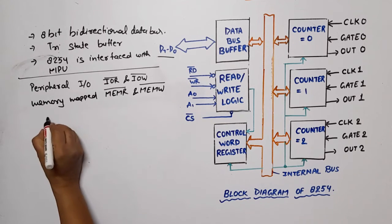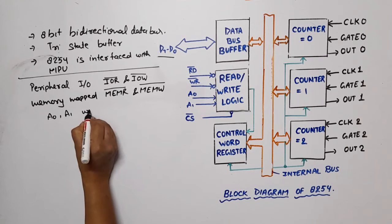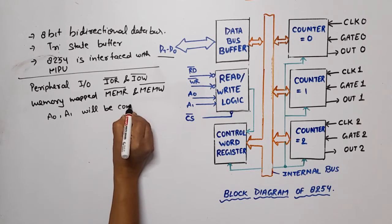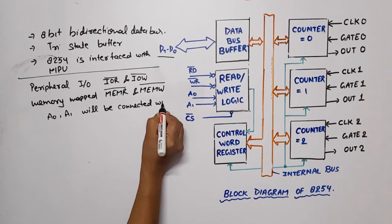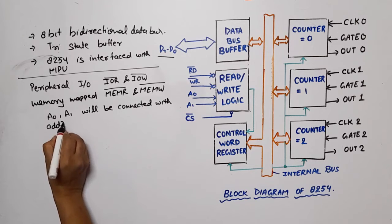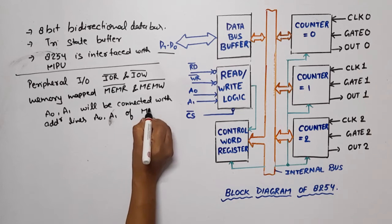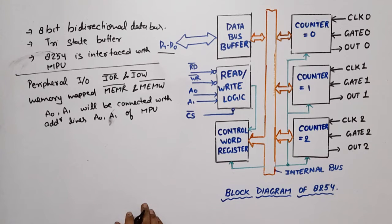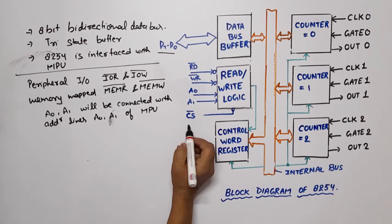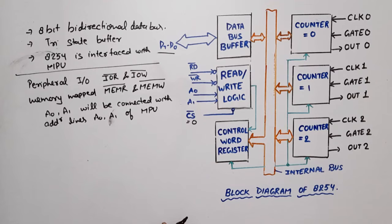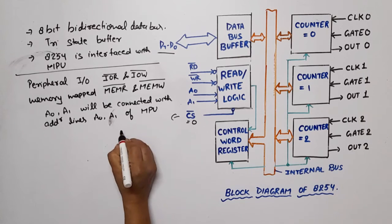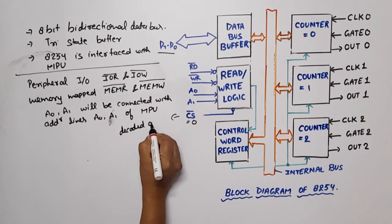Now, A0 and A1, these are the address lines. A0 and A1 will be connected with address line A0 and A1 of MPU.